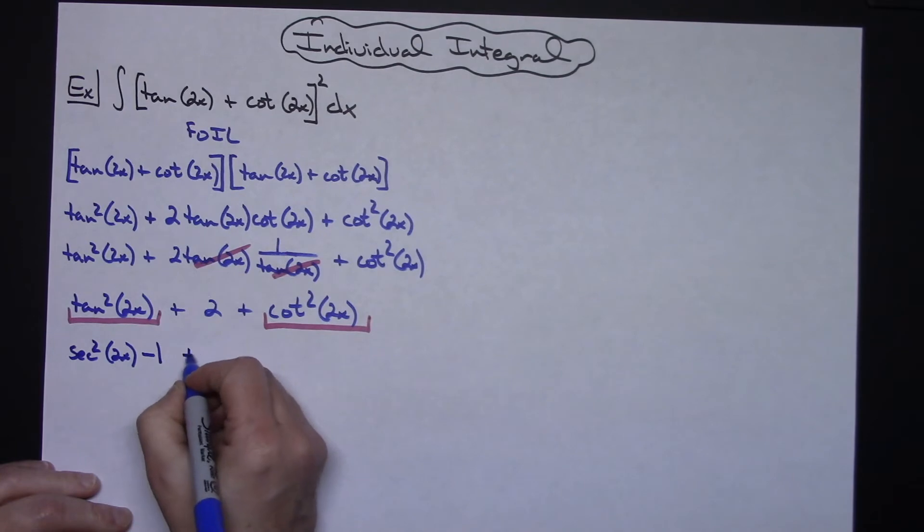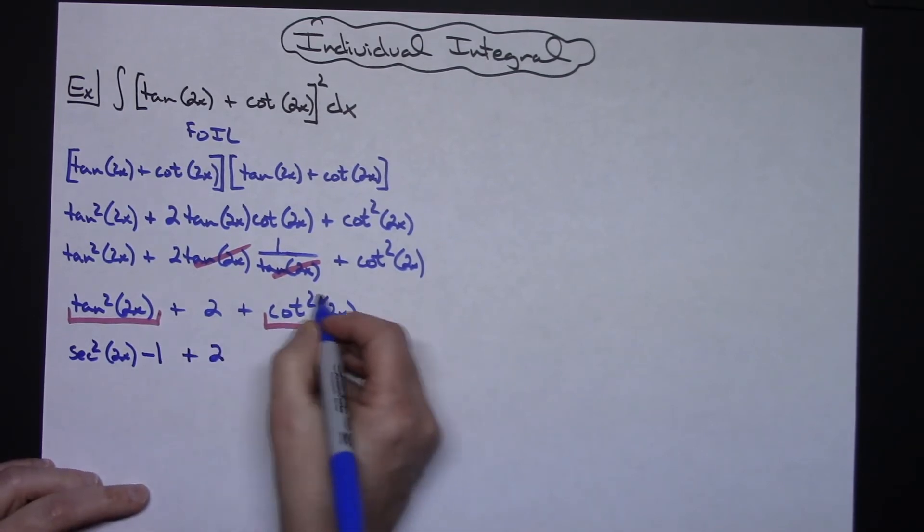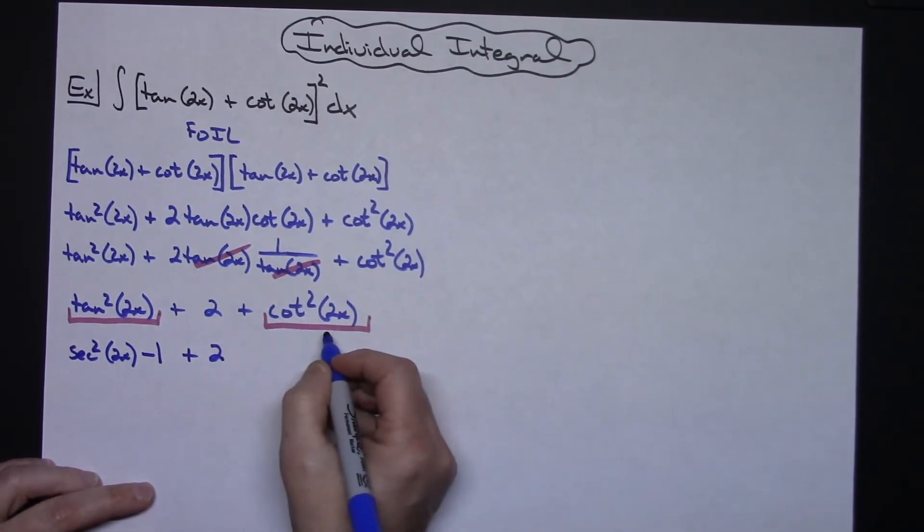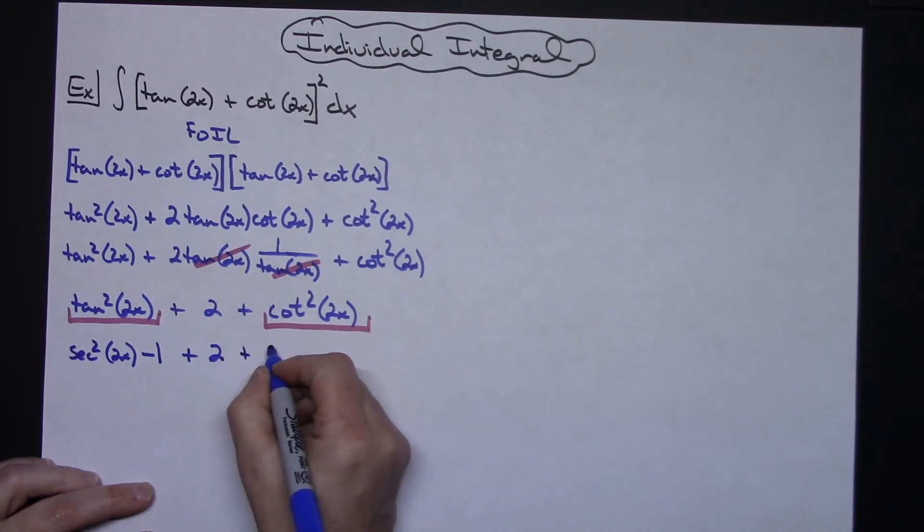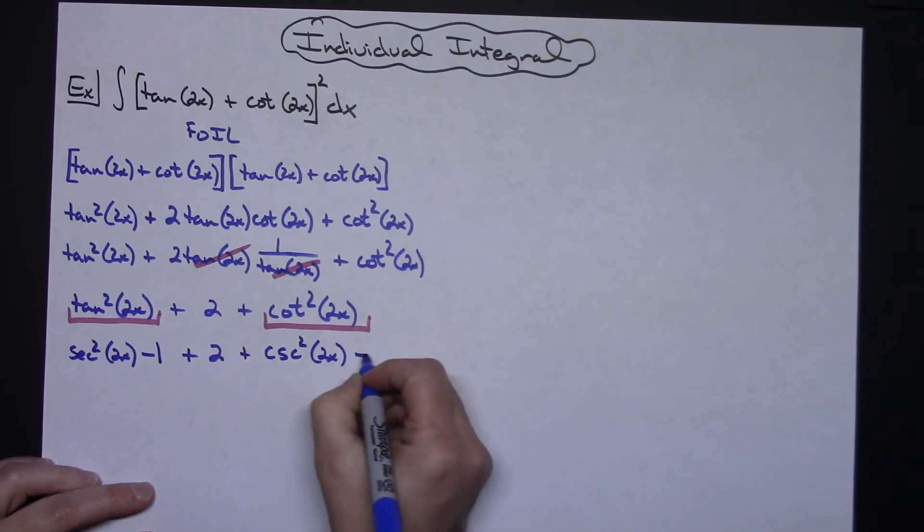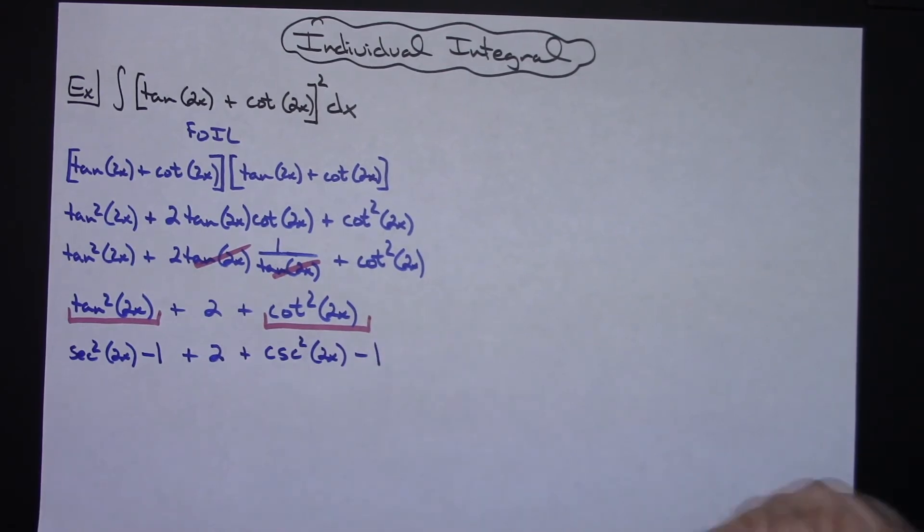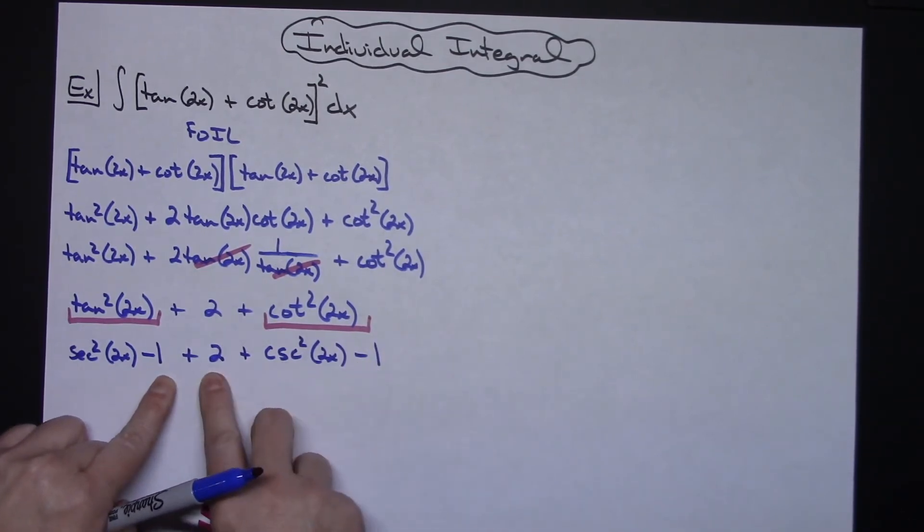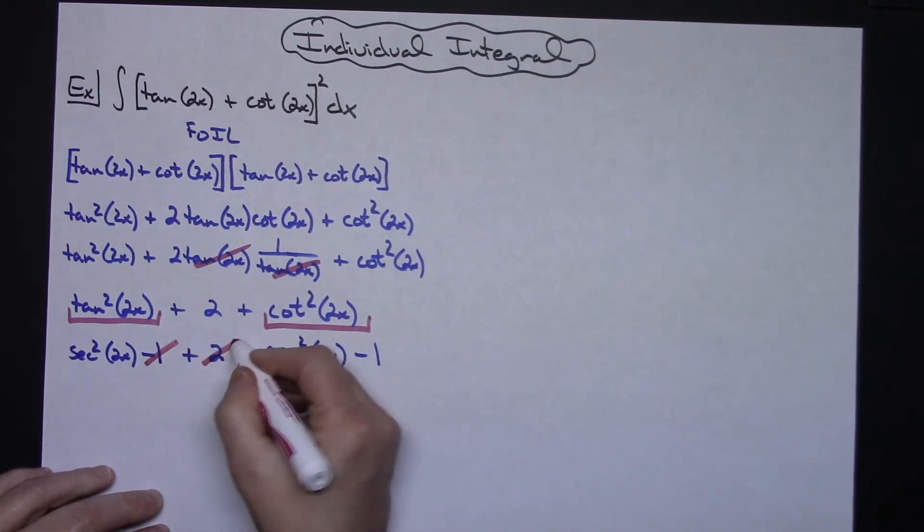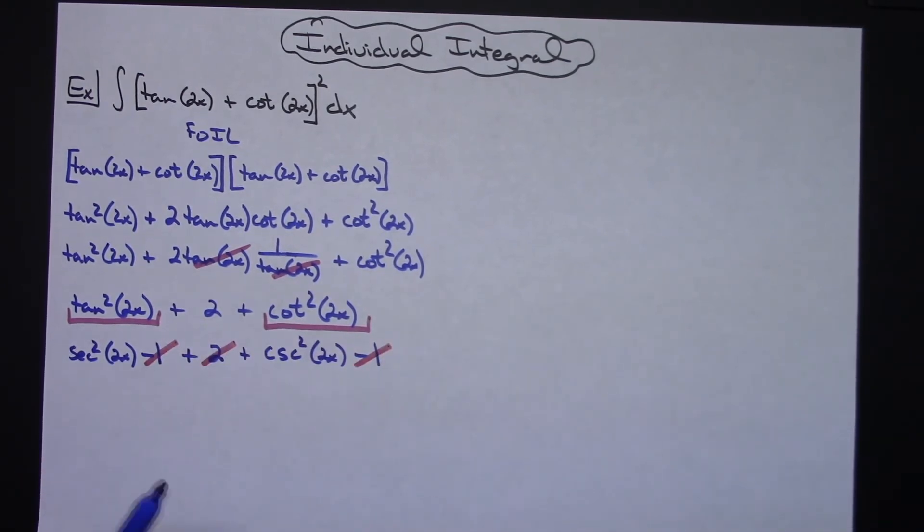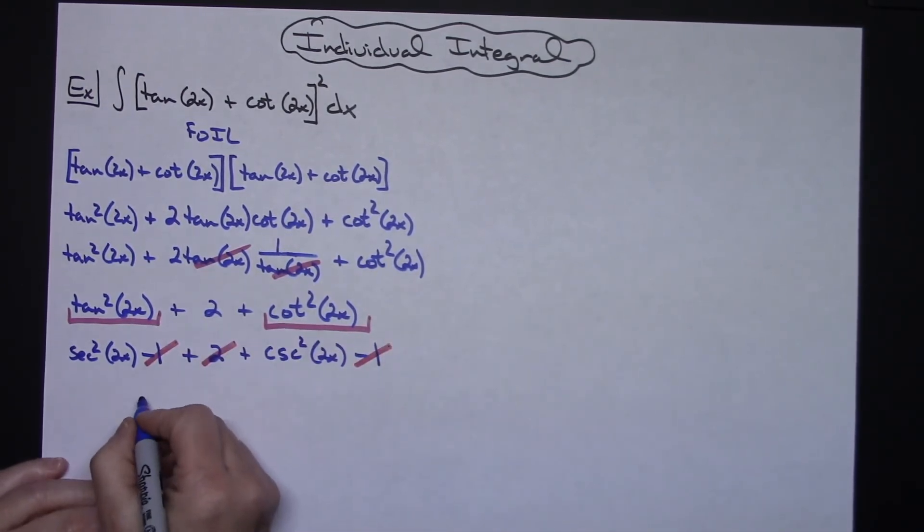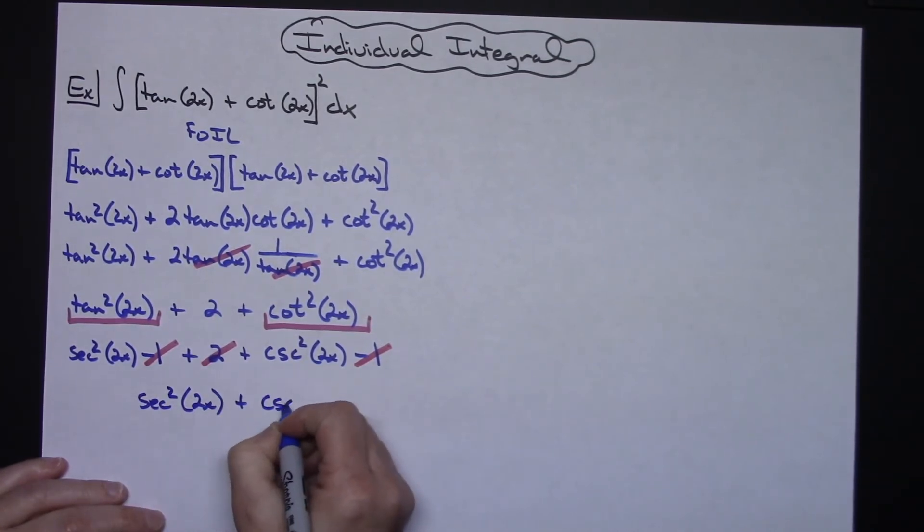So for tangent squared of 2x I can replace that with secant squared of 2x minus 1. I'm going to still have that plus 2 in the middle and then replacing this with its Pythagorean identity I can have a cosecant squared of 2x minus 1. Now I can take a look at minus 1 and minus 1 and plus 2 and I can see that all three of those now are going to cross out leaving me with a secant squared of 2x plus a cosecant squared of 2x.